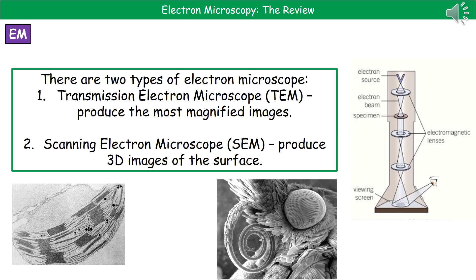These are the real up-close images. The second type is the scanning electron microscope, or SEM, and this one has the unique feature of being able to produce three-dimensional images of the surface. The picture at the bottom on the left-hand side is a TEM image, and on the right-hand side that's a scanning electron microscope image, as you can see from the 3D nature of it.